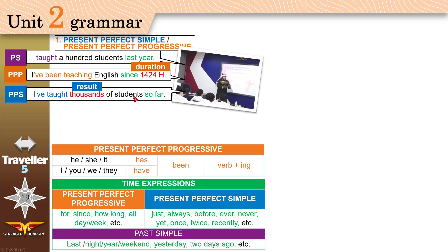With Present Perfect Simple you can also use 'since' and 'for.' You can say 'I've taught thousands of students since 1424' — it is correct. But we still use Present Perfect Simple because the result — thousands of students — is what is important. You can also use 'just' (meaning not long ago), 'always,' 'before,' 'ever,' 'never,' 'yet,' and 'already.' The difference: we use 'yet' with negative sentences and questions — 'I haven't eaten my food yet' or 'Have you eaten your food yet?' We use 'already' with affirmative sentences — 'I have already eaten my food.'